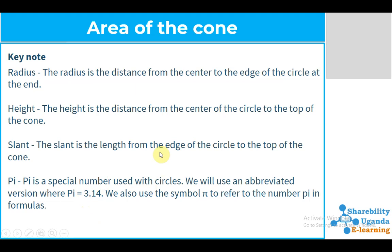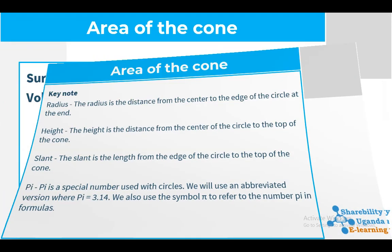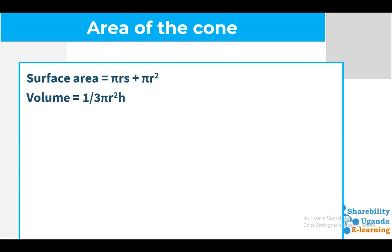In solving problems involving a cone we should understand those terms and where they come from. The formula of the surface area of a cone is given as pi*r*s plus pi*r², and the volume is given by one-third times pi*r²*h, where h is the height and s is the slope or the slant.